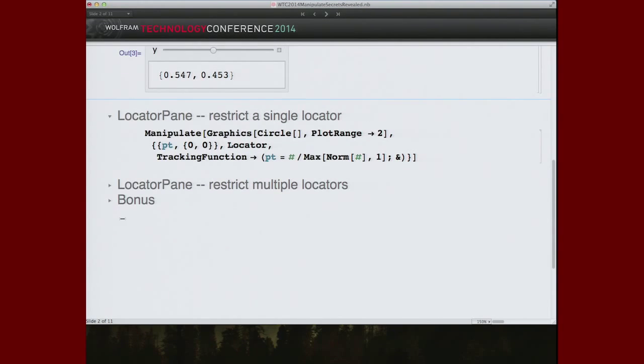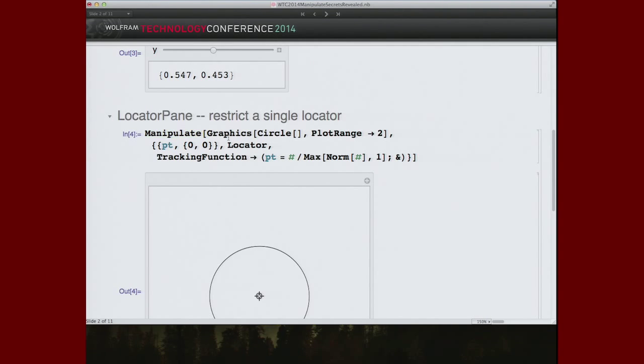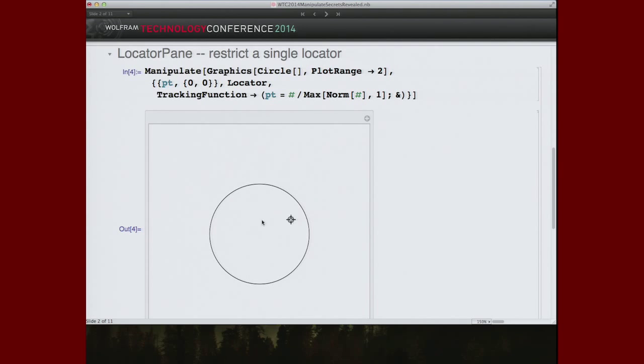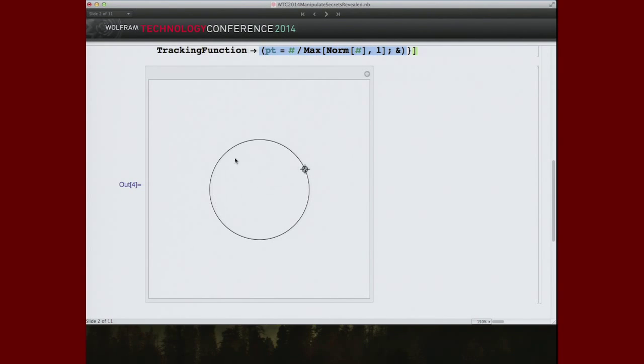And as I say, this is useful throughout our control language. Locator pane is another very common. Locator style manipulate variables are very common. It's common to want to restrict them in certain ways. Here is an example of a locator that you cannot move outside of the unit circle, no matter how hard you try, because as you're dragging it, the new value assigned to this variable is coordinated through this function. And this function never lets the norm grow past one. So here we have a trapped locator.